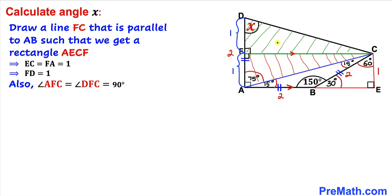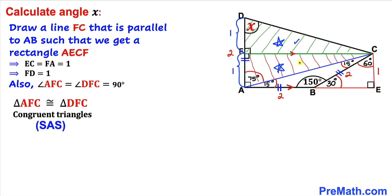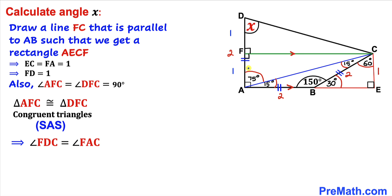Now let's focus on right triangles AFC and DFC. Both triangles are congruent since AF equals DF (both 1 unit), side FC is common to both, and the included angle between those sides is 90 degrees in each case. By the Side-Angle-Side congruence theorem, triangles AFC and DFC are congruent, so angles FDC and FAC are congruent.